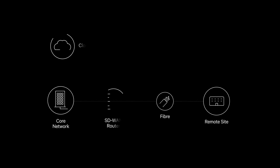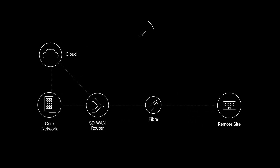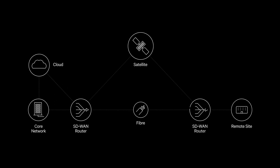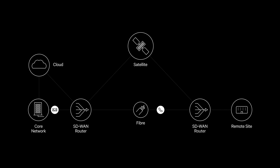In a multi-access network environment, such as when a location is connected by both satellite and terrestrial means, SD-WAN directs traffic generated by each application to the most optimal path. For example, it could prioritise email and website traffic over a satellite link while routing latency-sensitive voice over IP calls over the terrestrial connection.